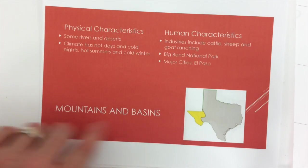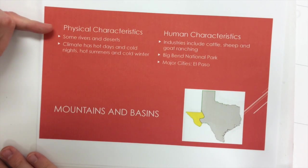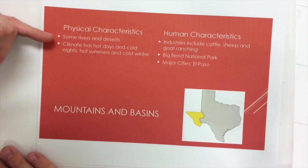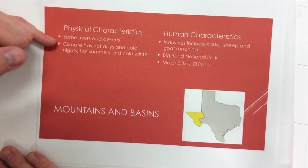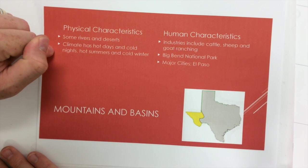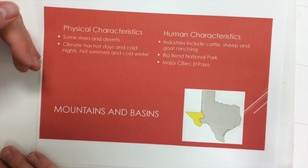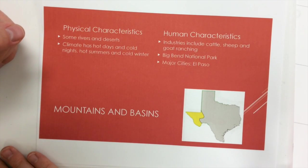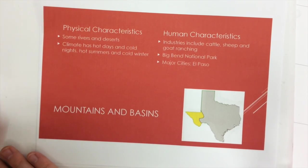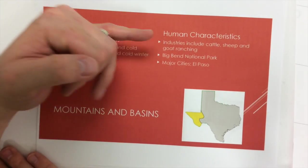The next region is the mountains and basins, located in far west Texas. The physical characteristics include some rivers — mainly the Rio Grande — and lots of deserts. The climate is very hot during the day, very cold at night, very hot summers, and very cold winters, because of the desert conditions.